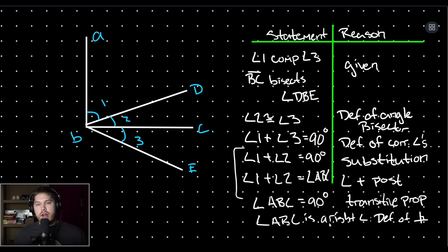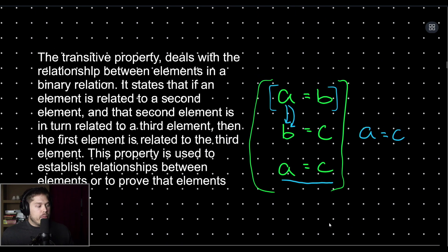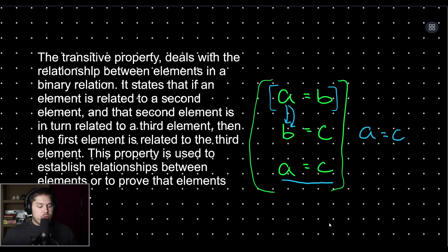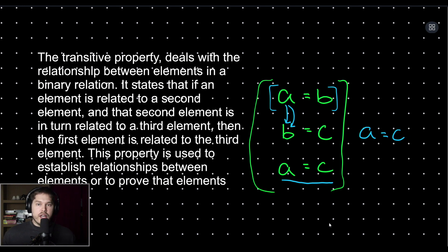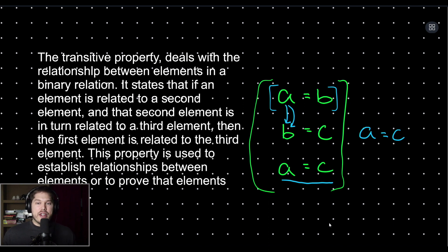There's an example of a proof that uses both the transitive property and the substitution property. As a quick recap: the transitive property deals with establishing relationships between different things, whereas the substitution property deals with substituting a value into an expression. I hope that cleared up some confusion between the two. If you found this video helpful, please leave a comment below, subscribe to the channel, and I'll see you in the next video.